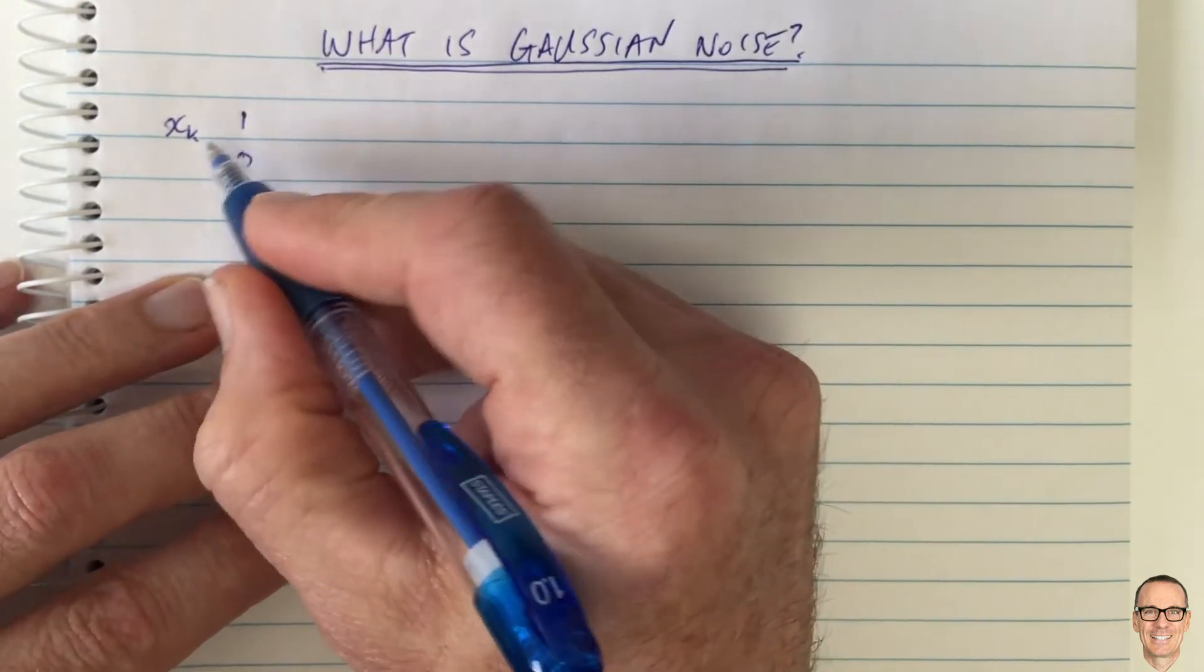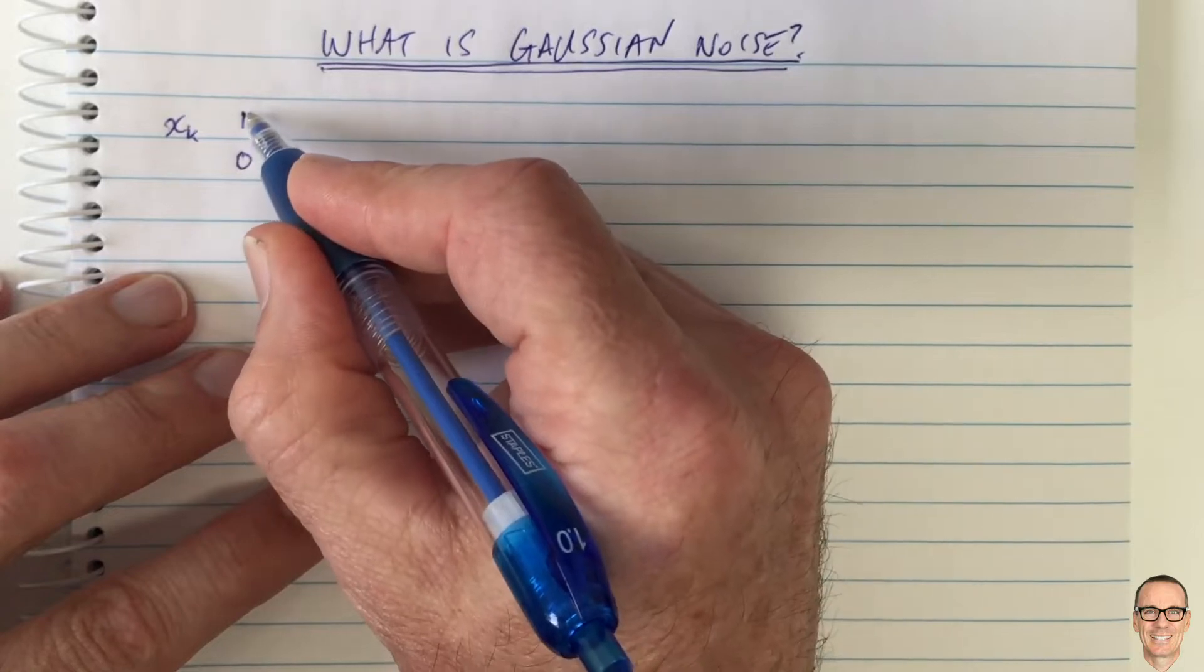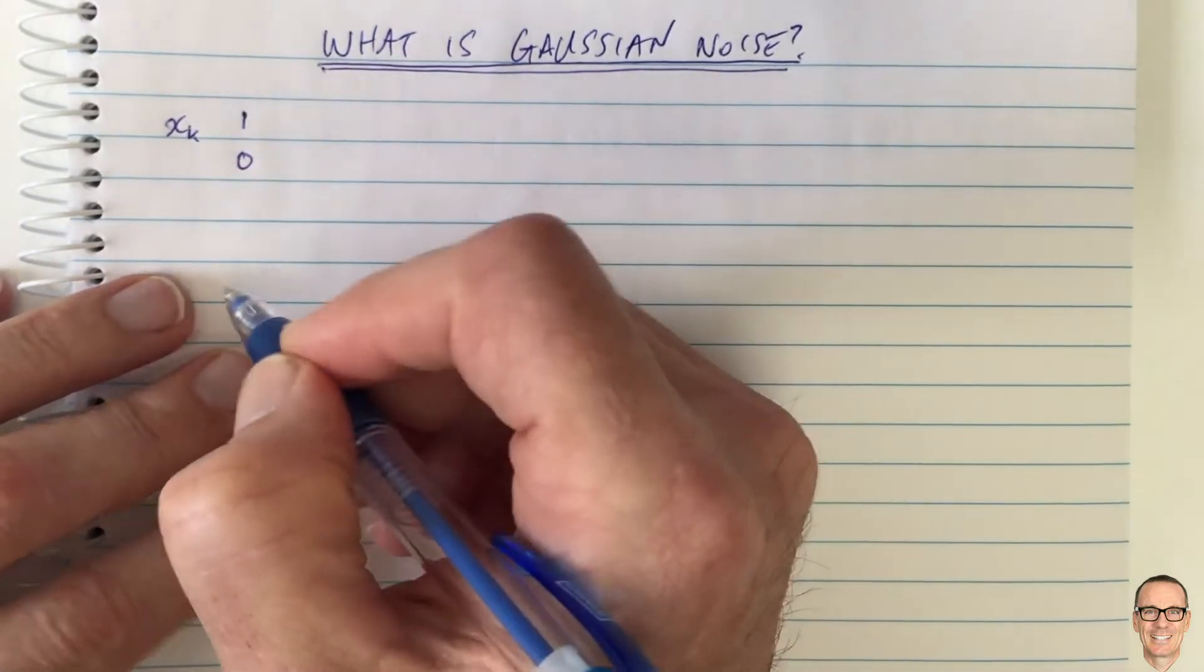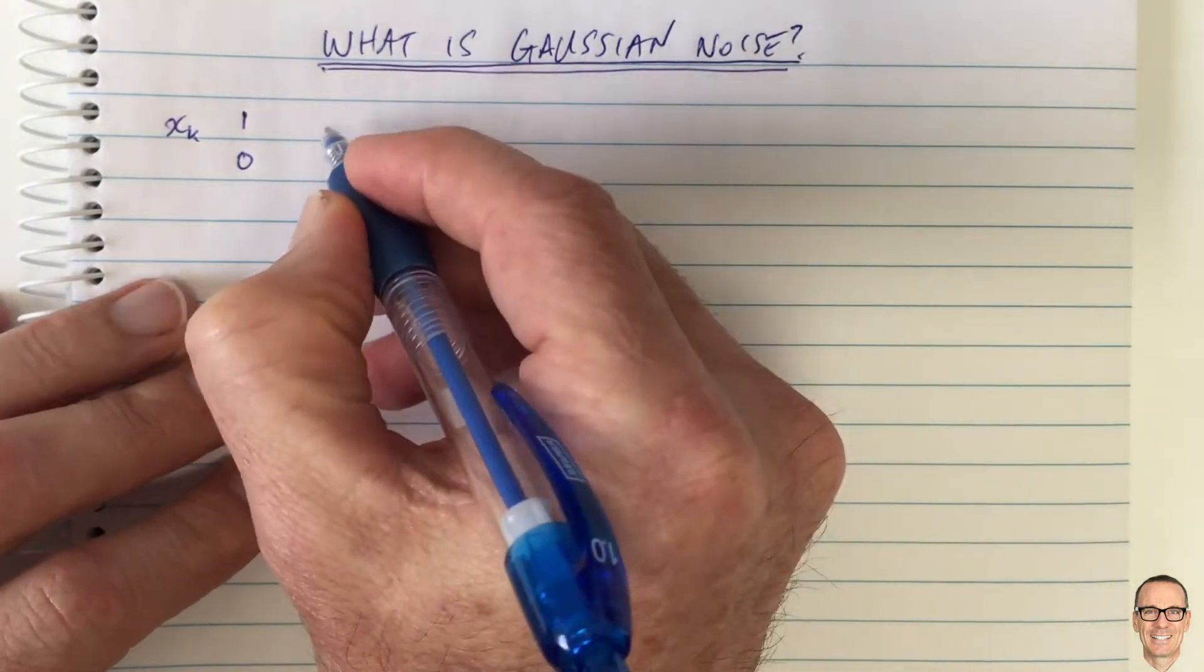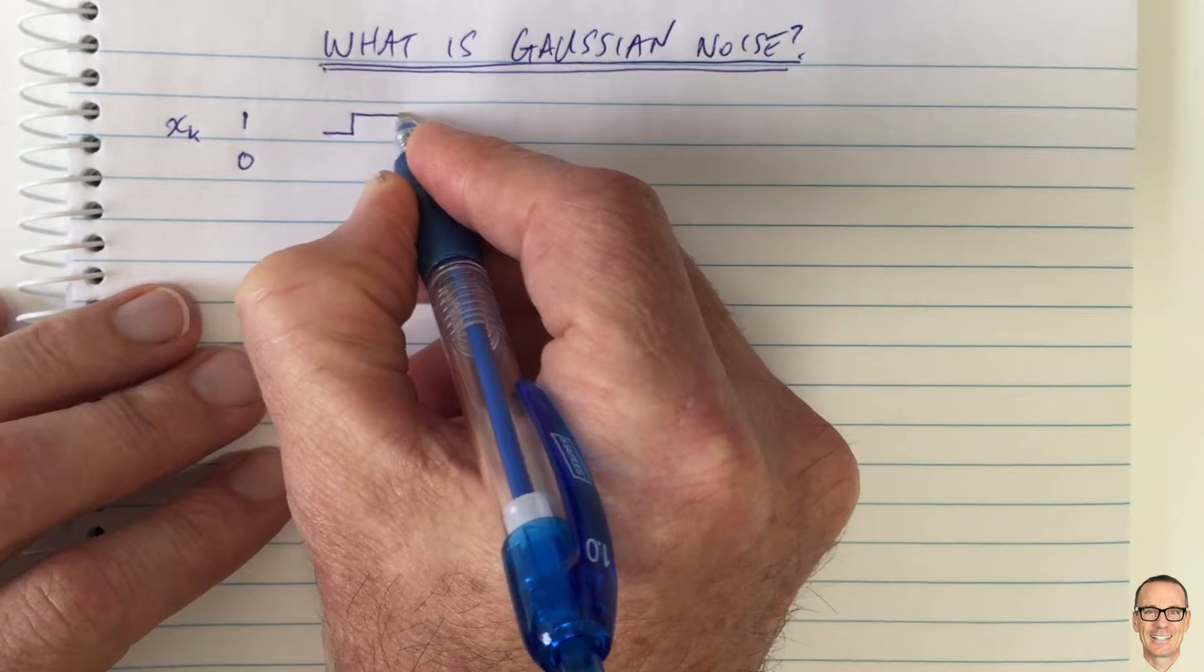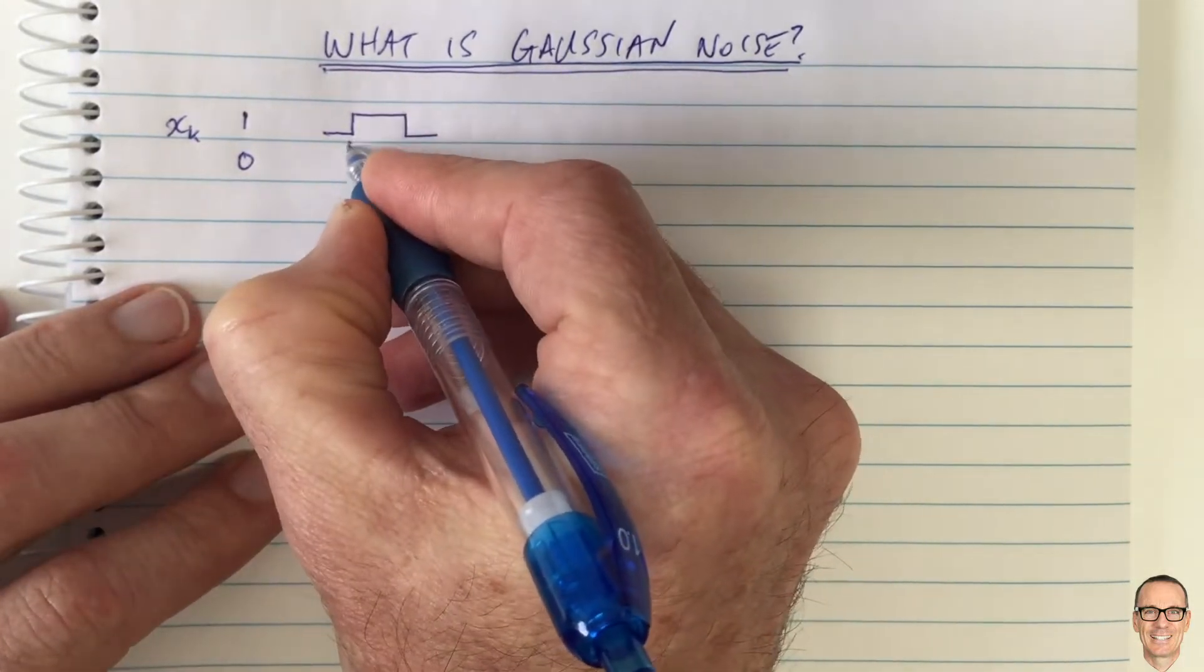Let's consider a digital communication system where at time k we want to send either a 1 or a 0. We'll just call this X. X is the transmitted signal. The most basic way to do this over a wire